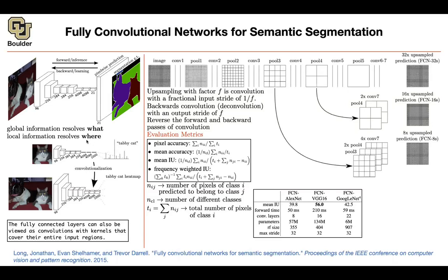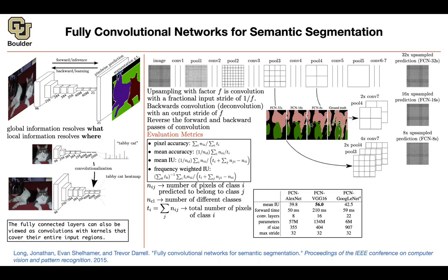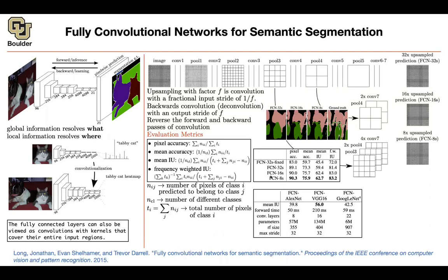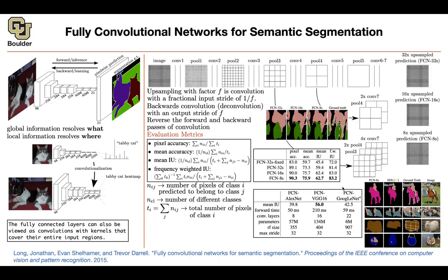If you have only the fully convolutional network with 32x upsampling, this is what you get as segmentation output. The ground truth is what someone labeled. FCN-16 gives you more detail, and FCN-8 gives you even more detail — not perfect, but actually not bad. The fully convolutional network with 8x upsampling gives you the best result regardless of the metrics — pixel accuracy, mean accuracy, mean IoU, and frequency-weighted IoU.